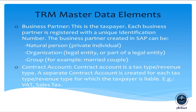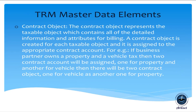After entering BP details, the Contract Account is created, which describes the tax type. Different tax types and revenue types exist for each taxpayer, and these vary from country to country — for example, the UK has VAT (bat), whereas India may not. The Contract Object represents the taxable object and contains all detailed information and attributes required for billing, including due dates.